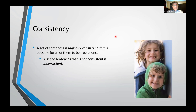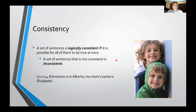The next concept is consistency. A set of sentences is logically consistent if it is possible for all of them to be true at the same time. If it's not possible, the set is inconsistent. For example: 2 plus 2 equals 4, Edmonton is in Alberta, my mom's name is Elizabeth — this is a consistent set. All of these sentences can be true at the same time, and in fact are all true at the same time.